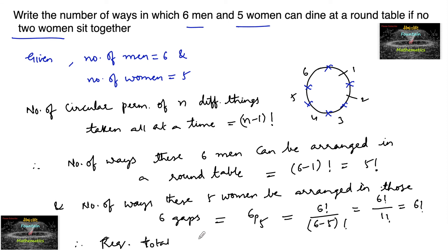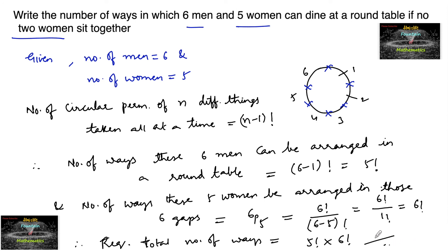Therefore, the required total number of ways is equal to arranging the men and then arranging the women. By the multiplication principle, it is 5 factorial into 6 factorial. That's the answer.